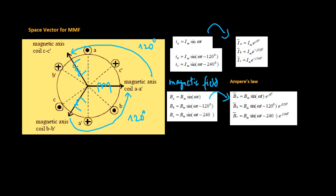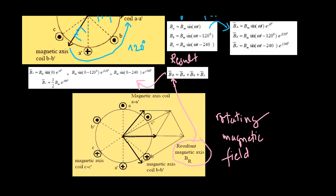The combined effect is equivalent to having a single sinusoidally distributed winding which is excited with constant current and rotates at the excitation frequency. The motion of the associated space vectors is illustrated in this picture.